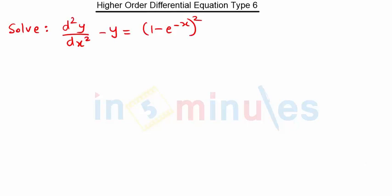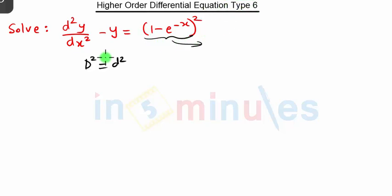Hello everyone, welcome to 'In Five Minutes.' In this video we are going to see the next problem on Type 6. If you see this part, this part is not matching with any of the types, so this is of Type 6. In this, we replace dx squared by capital D squared.